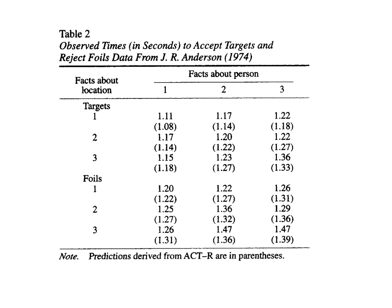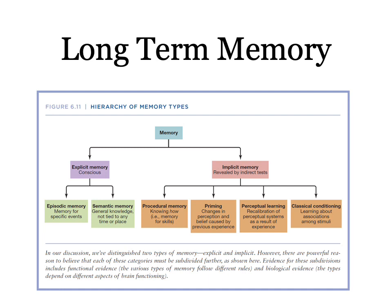That's retrieval from declarative explicit memory. The textbook covers other examples as well. I want to talk more about retrieval from other kinds of memory. We distinguished between explicit memory — covered by the fan effect and propositional networks — and implicit memory. I want to talk briefly about retrieving procedural memories, priming and perceptual learning, and also classical conditioning.